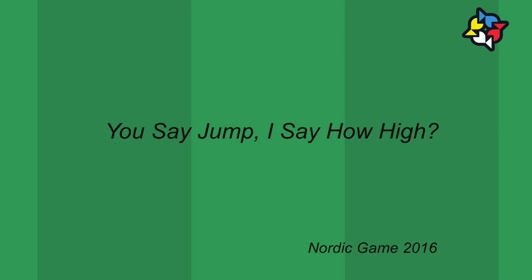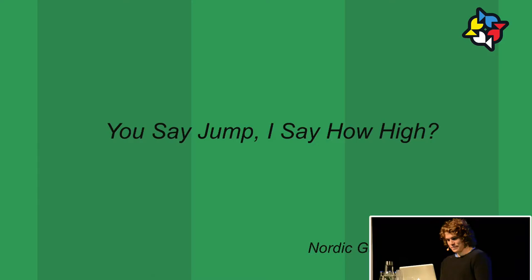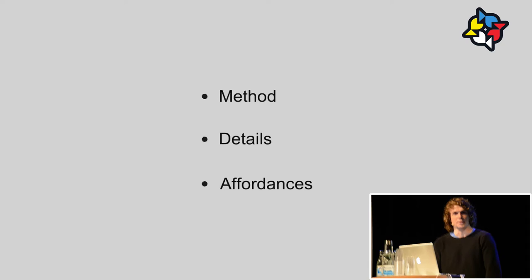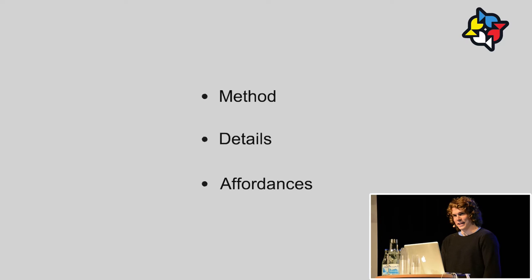The hope is that this will help game developers when designing a jump. Here's a rough overview of what we'll be going through: first, the method I used for gathering information and studying jumps; secondly, a lot of details about three specific jumps; and lastly, what that means for designing games — why they have the jump they have and why that's ideal for a given game.